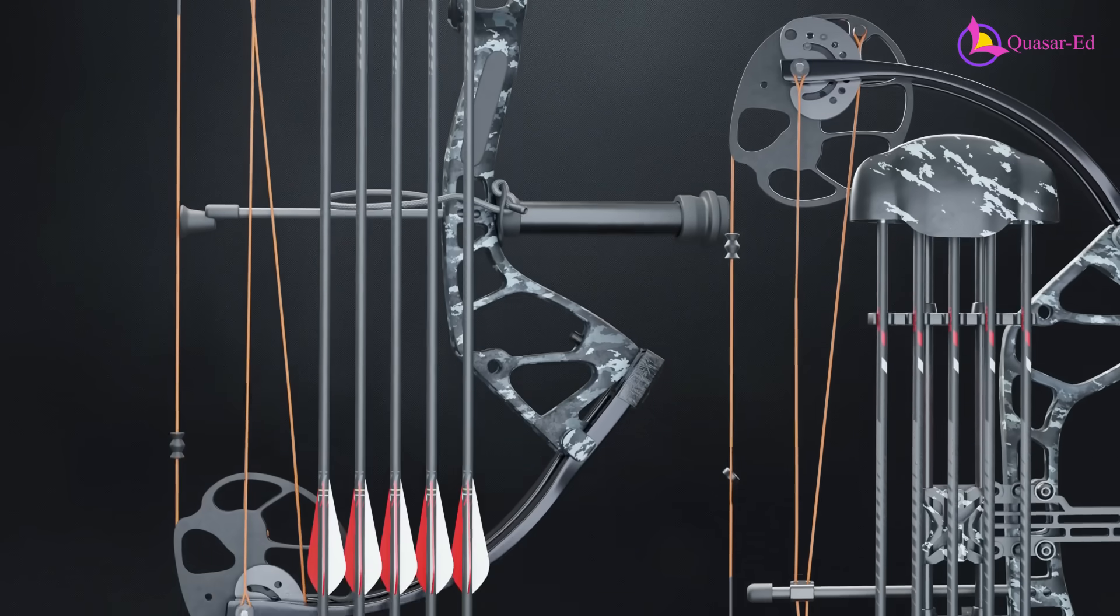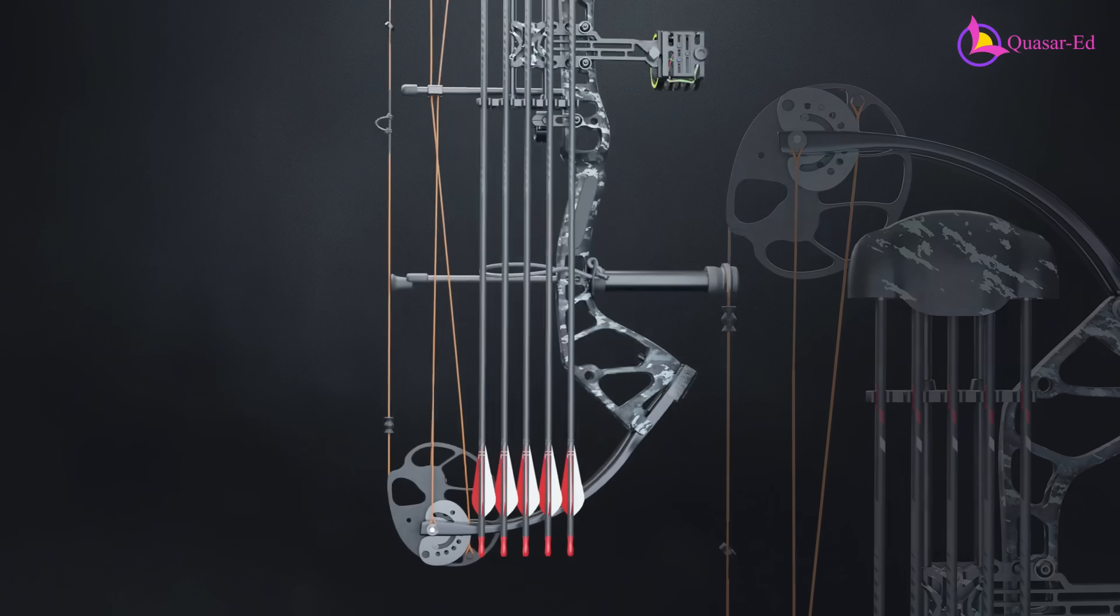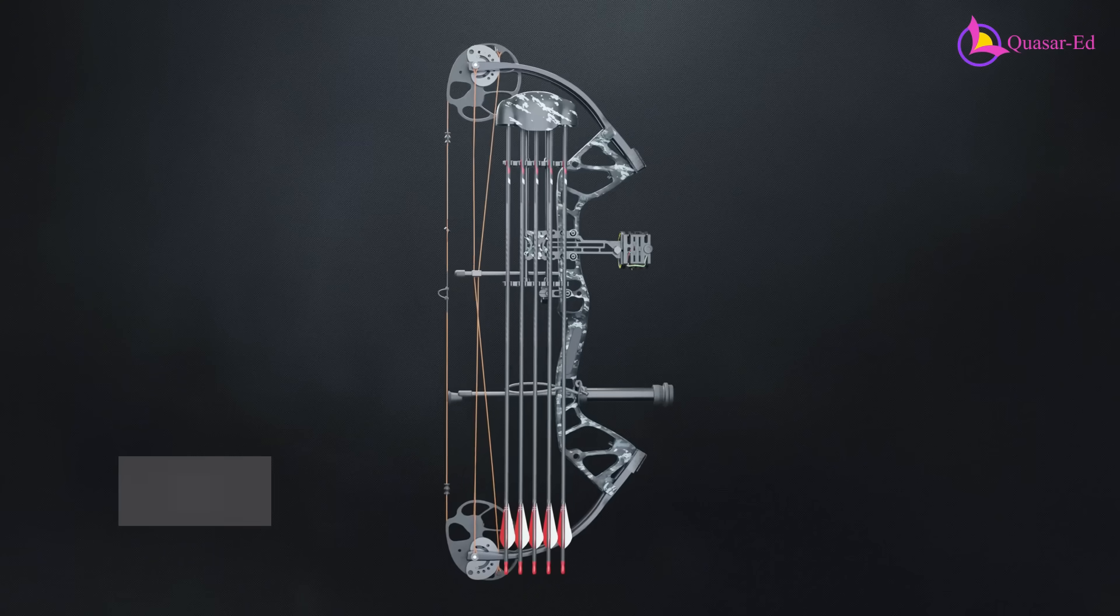Ever seen a bow with strange oval-shaped wheels at each end, connected by multiple strings? This is a compound bow.